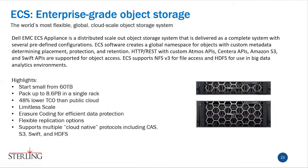At a high level, ECS is a distributed scale-out object storage system delivered as a complete system with predefined configurations. Highlights include 48% lower TCO than public cloud, limitless scale, erasure coding for efficient data protection, and flexible replication options. It supports multiple cloud-native protocols including CAS (the old Centera protocol, great for archiving), S3, Swift (what Dropbox is built on), and others, plus HDFS for Hadoop — all in the same box without needing a separate box for each protocol.